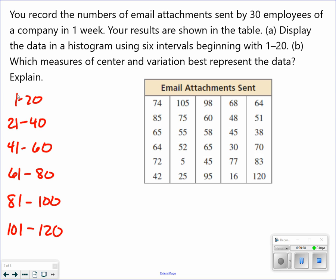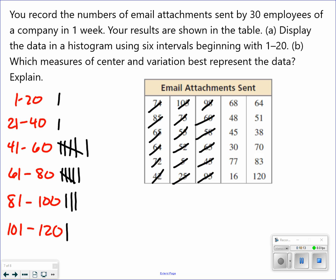All right. So, now, 74, 85, 65, 64, 72, and 42. So, I did all the ones in the first column. I know I didn't cross those off as I went that time. 105, 75, 55, 52, 5, 25, 98, 60, 58, 65, 65, 95, 65. Next column. 68.